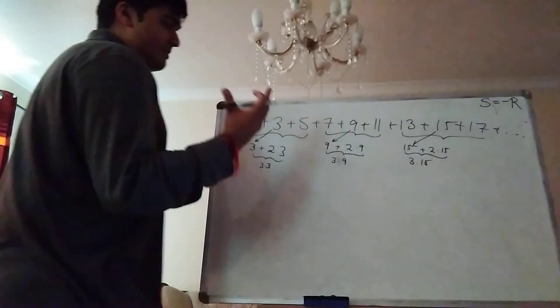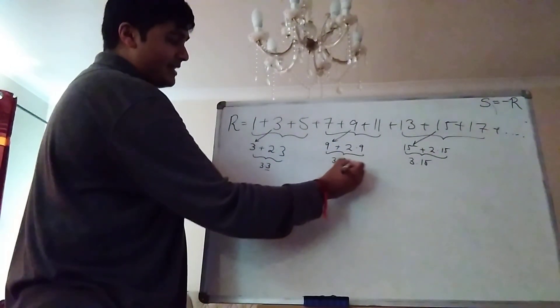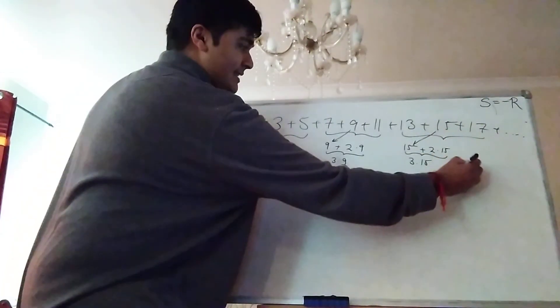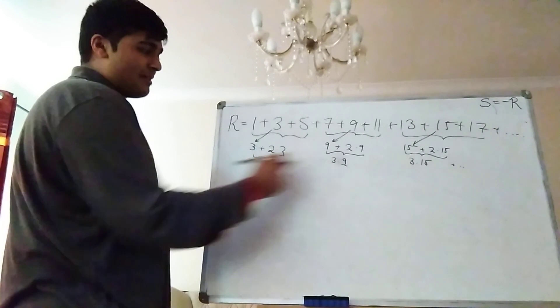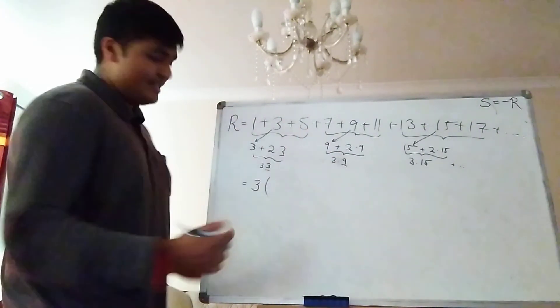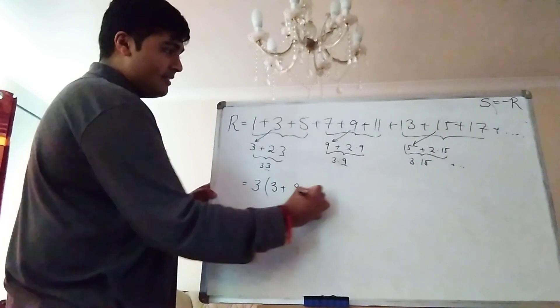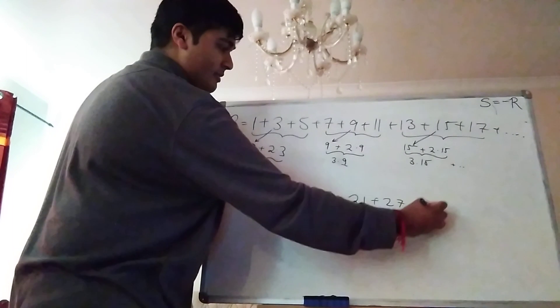So all in all this is 3 times 15. And this pattern continues. Where I'm getting 3 times a number. But also notice that this right hand number is increasing by 6 each time. So I get 3 plus 6 is 9. 9 plus 6 is 15. And this continues. Let's clean this up a bit. So I'm going to first factor out the 3 from the front of all of these. And put it there. 3. Then I get 3 plus 9 plus 15. And the next one will be 21. The next one will be 27. And so on.